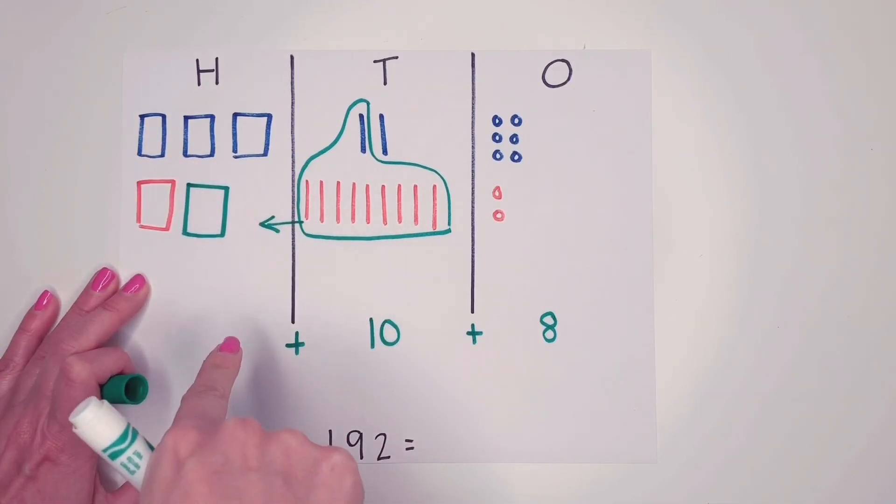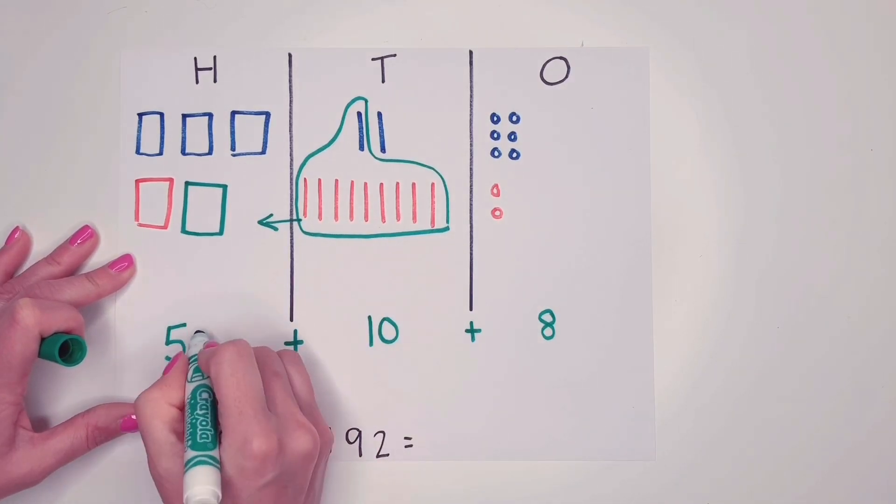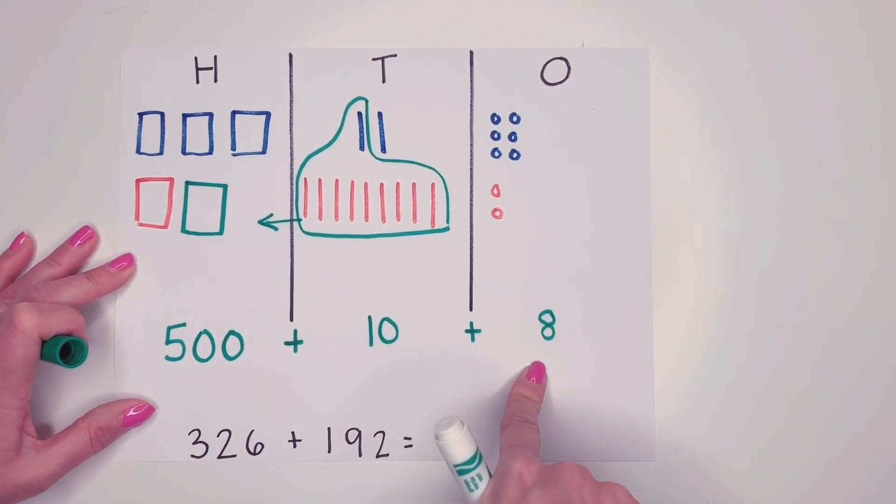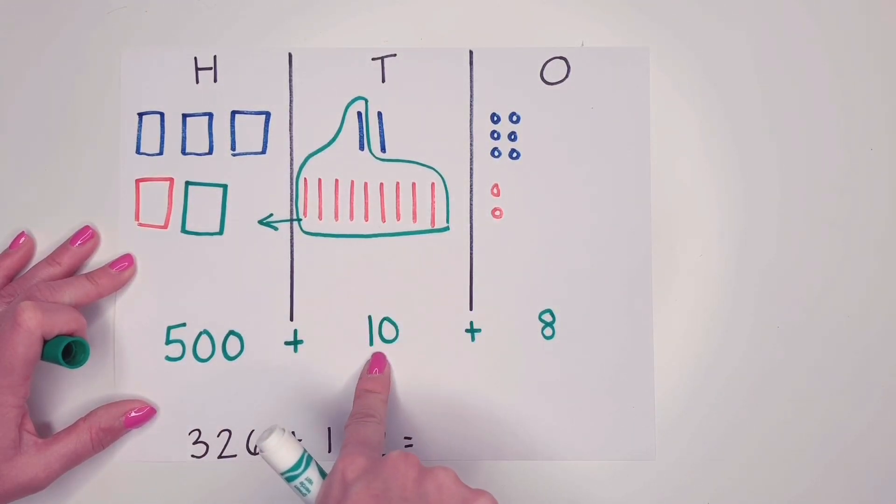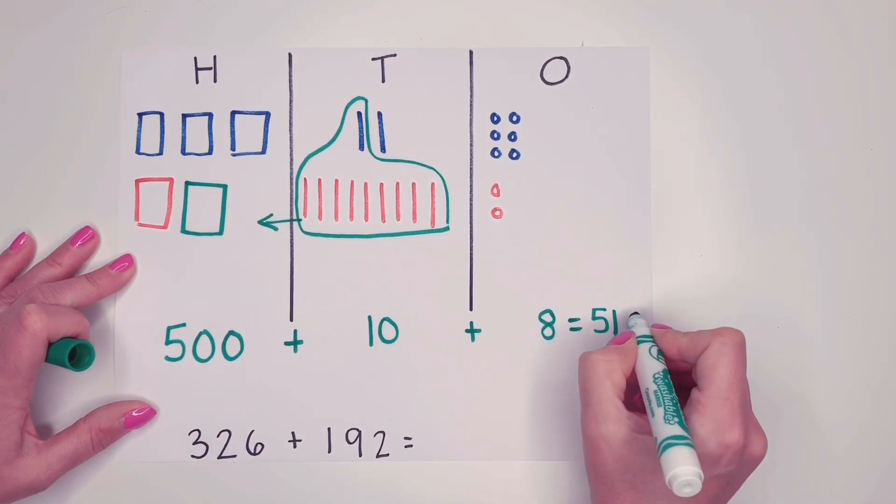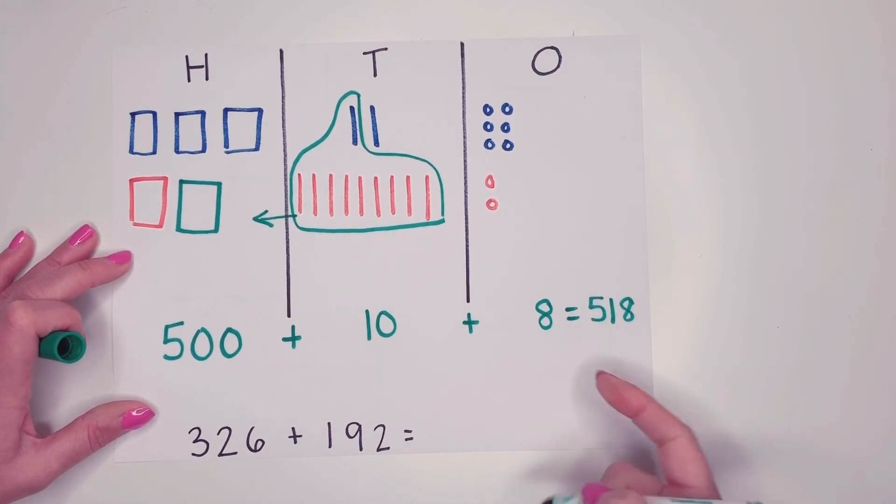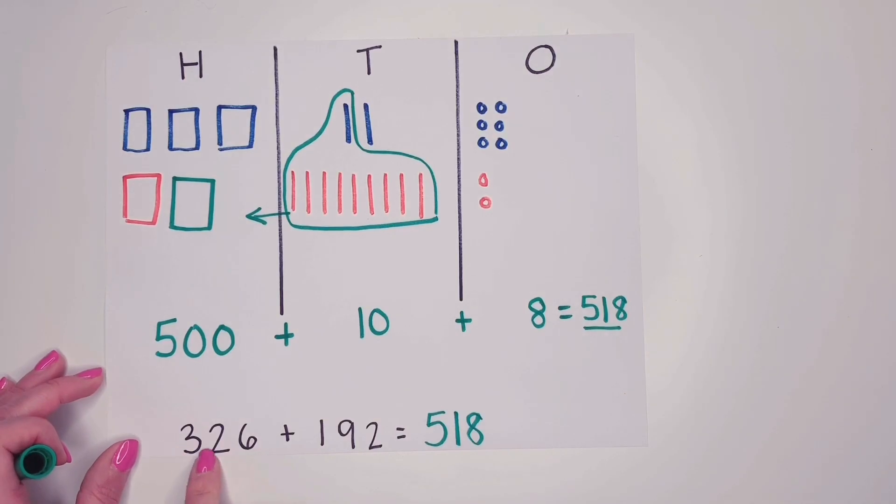And now I can count my hundreds. One hundred, two hundred, three hundred, four hundred, five hundred. So here I have my expanded form, five hundred plus one ten, which is ten, plus eight ones. So I know when I turn my expanded form into a regular number, it's going to look like this. Same thing here. We have five hundreds, one ten, and eight ones. So 326 plus 192 is 518.